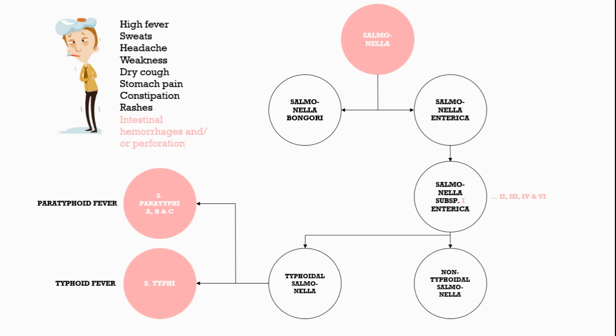Typhoid fever is most common in parts of Asia and Africa, which have the highest rates, where the disease most often occurs in children and young adults from 2 to 19 years. But it's not that common in the United States, Canada, Western Europe, Australia or Japan. Cases in these countries most often get the disease by travelling.